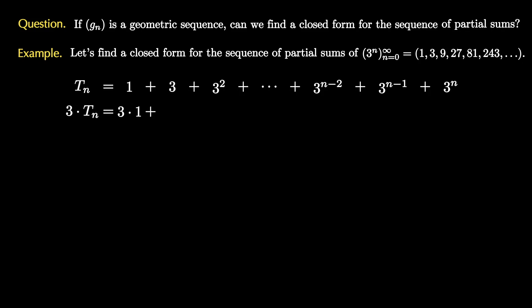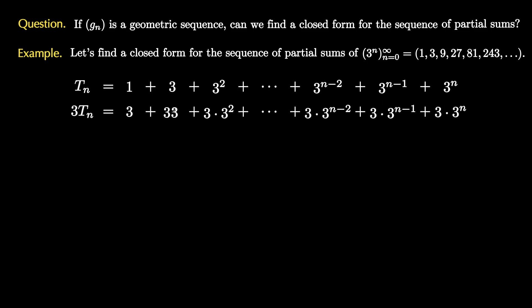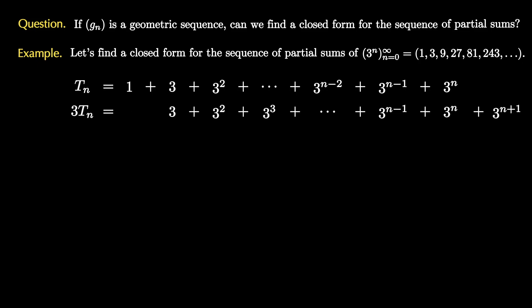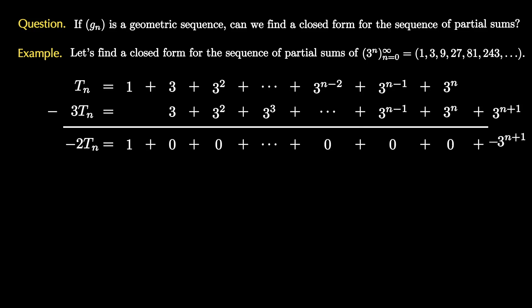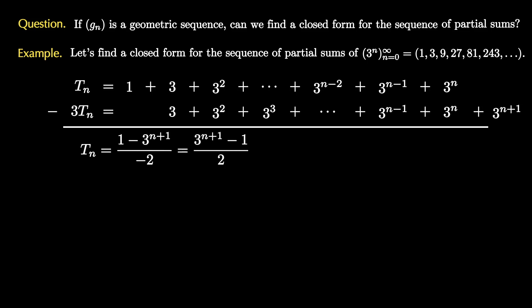Use the ratio 3 and multiply the sum that we're interested in by the ratio 3. What we end up with is the same sum with each power of 3 incremented by 1. The next step is to realize that we have almost the exact same sum as above, but everything is offset, so let's shift this sum to the right so that the terms line up. Finally, let's subtract the two values term by term. The first term is negative 2 t_n, then we have 1, then we add 0 at each place because the terms match up, until the very last term, where we subtract off 3 to the n plus 1. Therefore negative 2 t_n equals 1 minus 3 to the n plus 1, and dividing both sides by negative 2 gives us t_n equals (3^{n+1} minus 1) all over 2. This is a closed form for the sequence of partial sums.